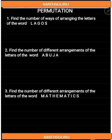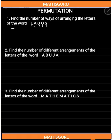We are going to use three questions to discuss that. The first question states: find the number of ways of arranging the letters of the word Lagos. If we count the letters of this word Lagos, we have one, two, three, four, five letters. That is, we are going to arrange these letters in five ways, which is five factorial.